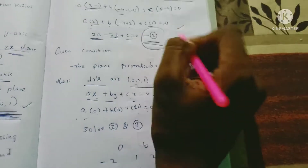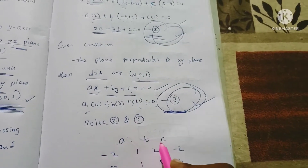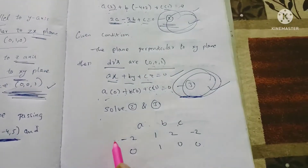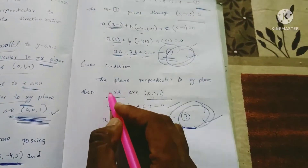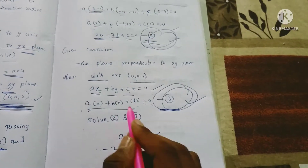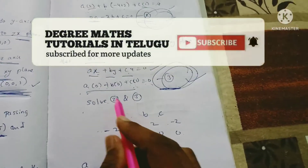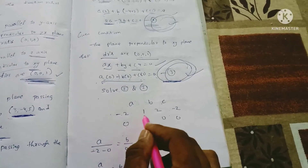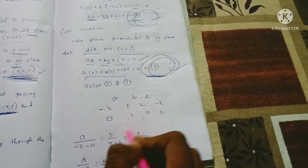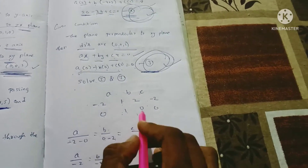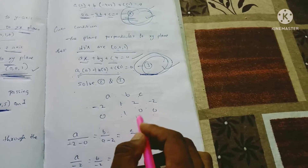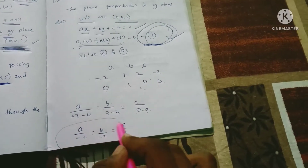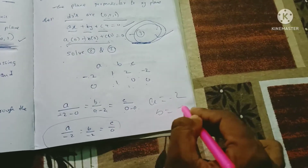Solving equations 2 and 3 using cross-multiplication with coefficients: a/(−2·1 − 0·1) = b/(1·0 − 1·2) = c/(2·0 − (−2)·0). This simplifies to a/(−2) = b/(−2) = c/0. Therefore a = −2, b = −2, and c = 0.